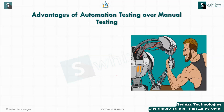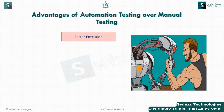Regarding the advantages of automation testing over manual testing — faster execution will happen because the machine executes the same test cases that a manual tester would, but very fast. You can also expect more accuracy because the tool does not commit mistakes like humans do.